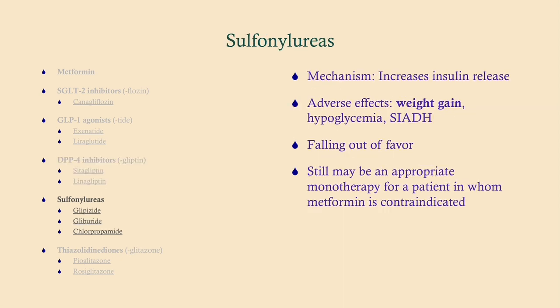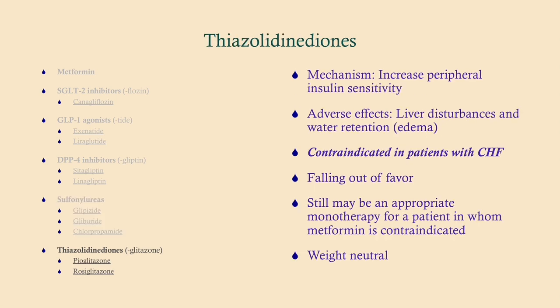Sulfonylureas work on channels on pancreatic beta cells to increase insulin release. The problem is they cause weight gain and strongly predispose patients to hypoglycemia, so they are falling out of favor. Thiazolidinediones, or TZDs — all ending in '-glitazone' — increase insulin sensitivity, but cause water retention. So if a patient already has congestive heart failure, avoid TZDs. For congestive heart failure, SGLT2 inhibitors are the preferred choice — remember that.